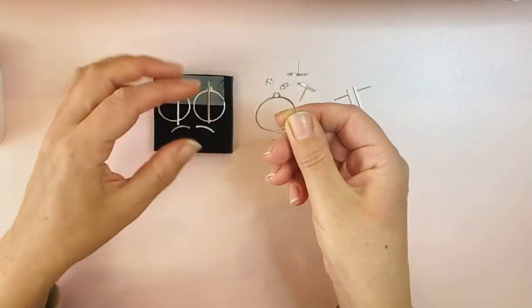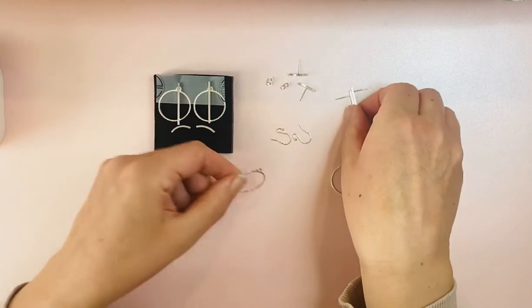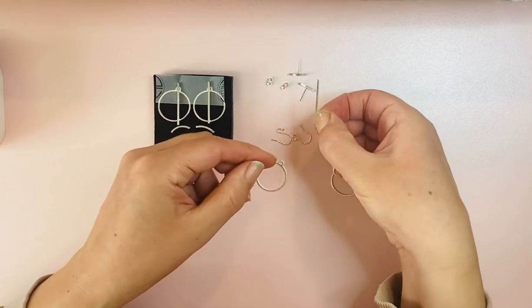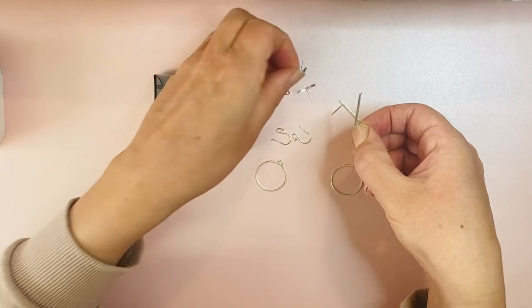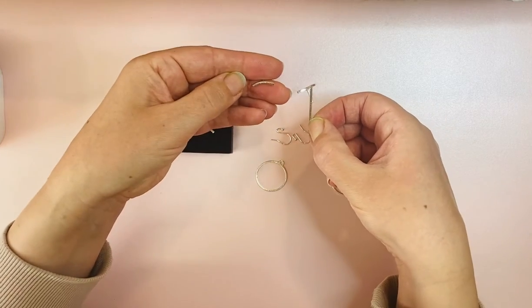You'd put either your long stud or your curved stud on the front of your ear first.